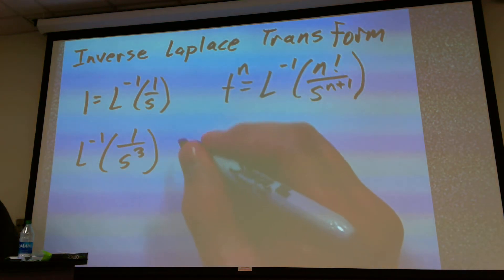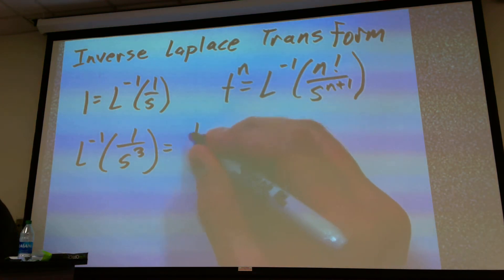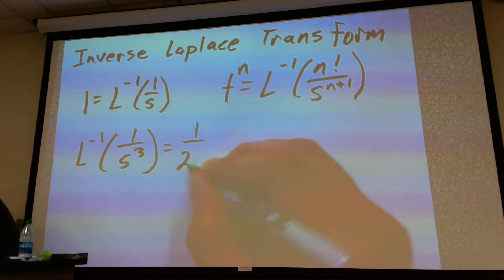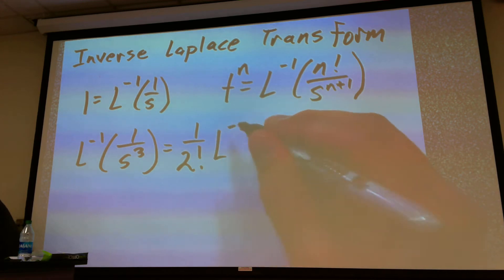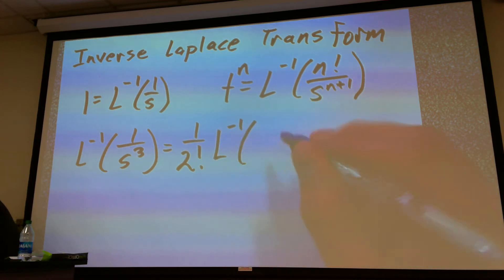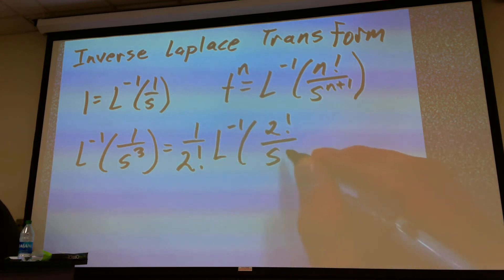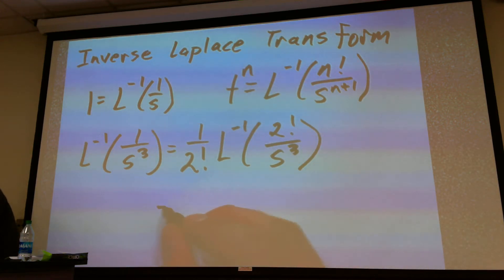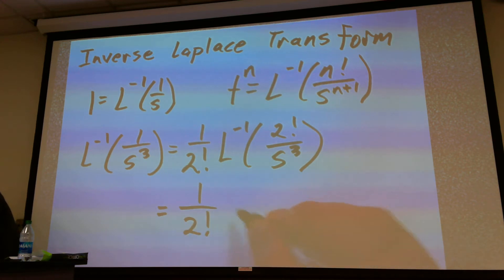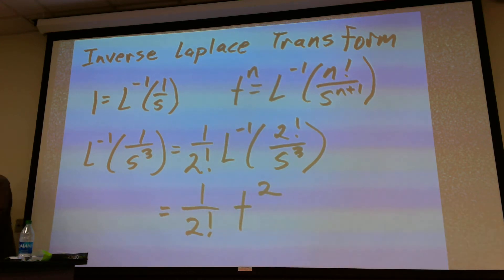So what I'm going to do is say this is the same thing as 1 divided by 2 factorial times L inverse of 2 factorial divided by s cubed. That would equal 1 divided by 2 factorial, multiplied by t squared.